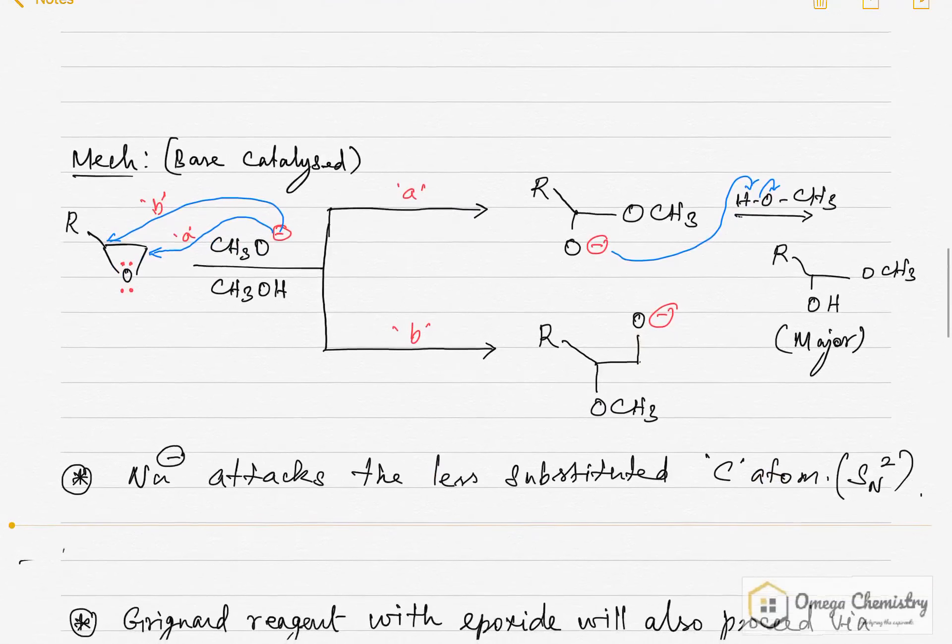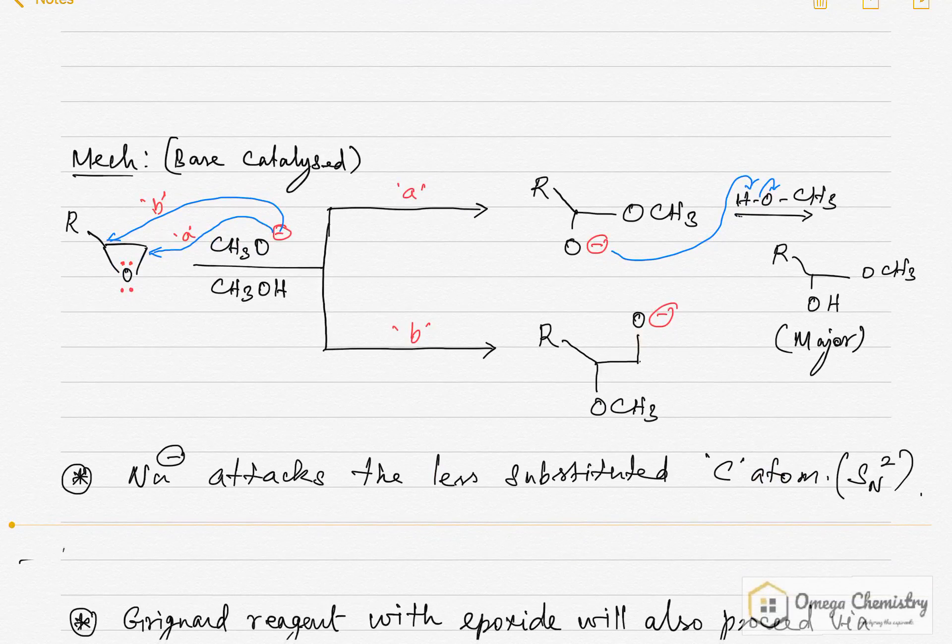Likewise, in base catalyzed reactions also, the methoxide ion can attack here or here. I am going to call it as A type attack if it attacks this carbon. If it attacks at this carbon, I am going to call it as B type attack. So, A type attack is more predominant and the major product will result from it.